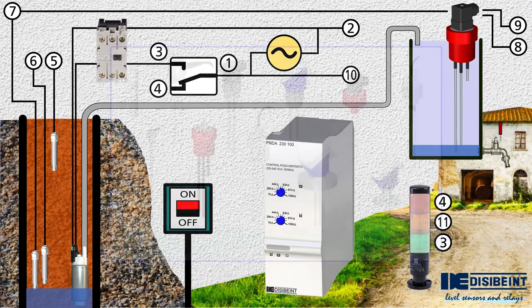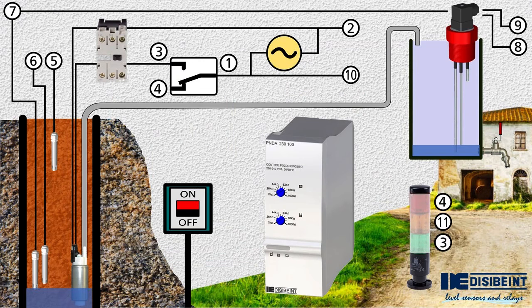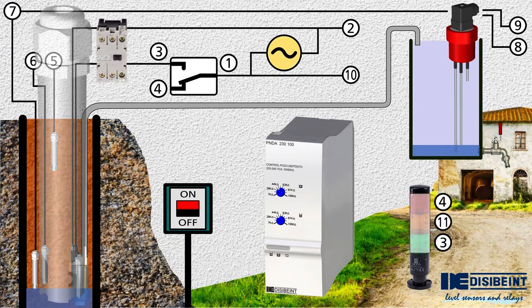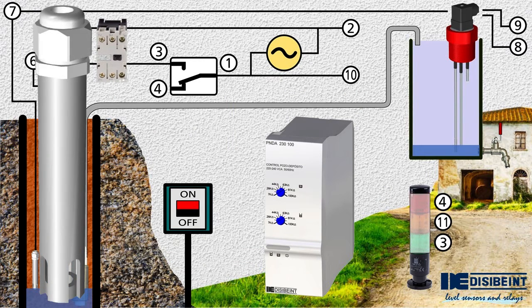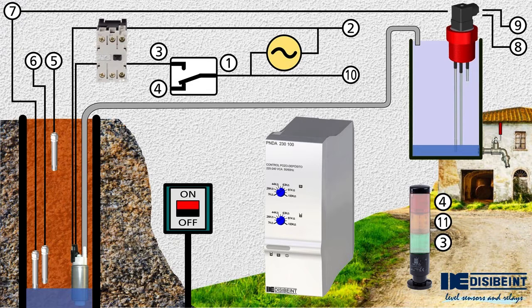There are numerous models of probes for the detection of liquids depending on the characteristics of the application. You can find them on our website. We will use two different types here to suitably adapt to each situation. NS probes are conductive electrodes made of stainless steel and protected by a polypropylene body. They are heavy so that they remain stable when hanging from the cable to which they are connected and do not lose their position. They are very suitable for wells, since the depth at which they are installed only depends on the length of the cable. We'll need three NS probes.